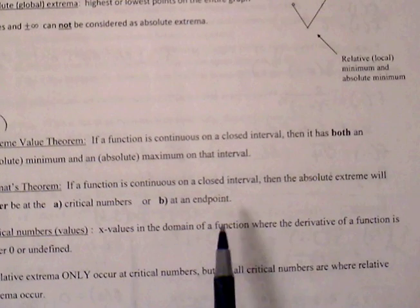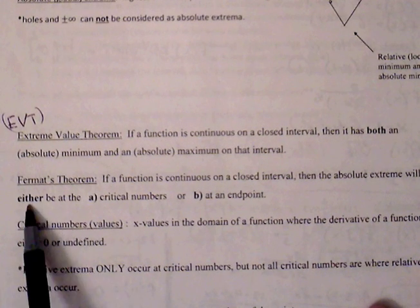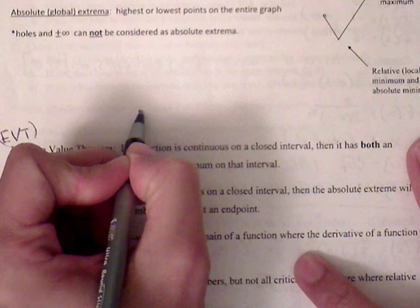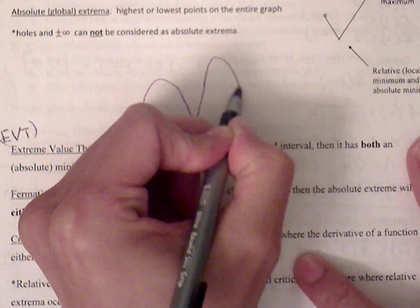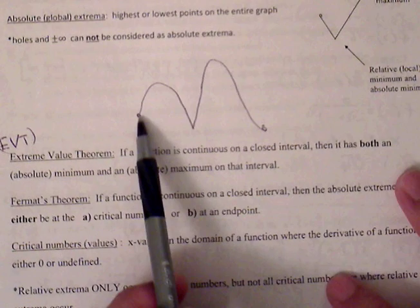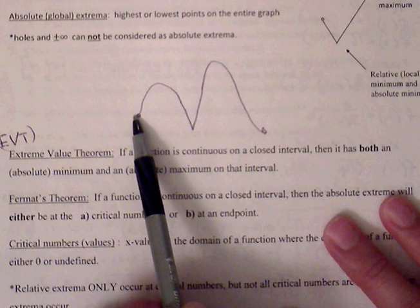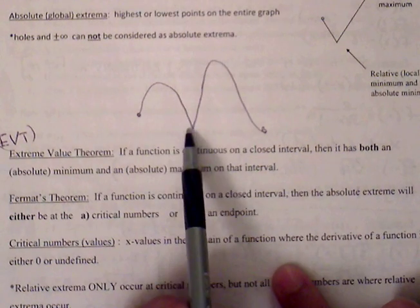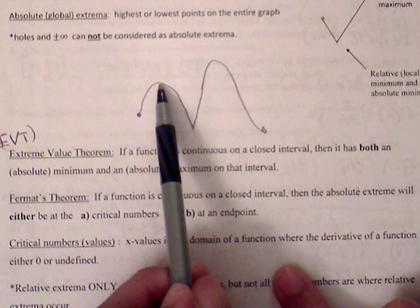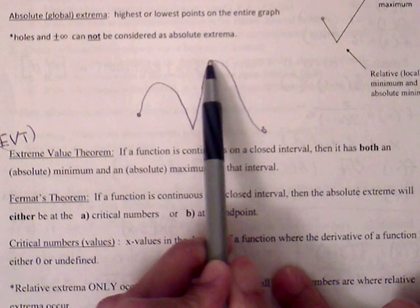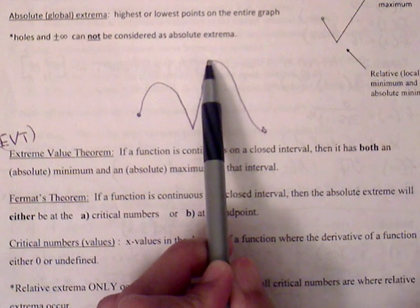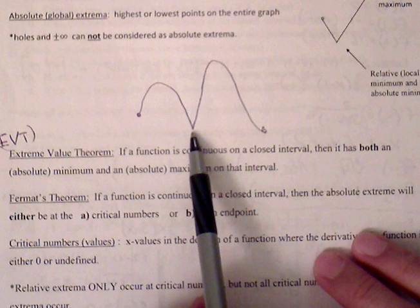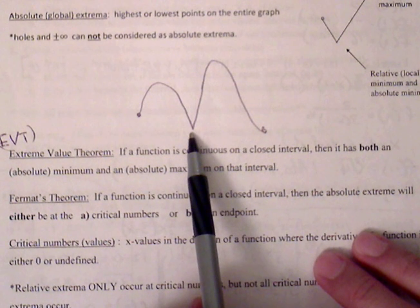Fermat's theorem says if a function is continuous on the closed interval, then the absolute extrema will be either at a critical number or at an endpoint. Critical points are found from the derivative — if we set the derivative equal to zero, we find where the slope is zero, and if we set the denominator of the derivative equal to zero, we find where the slope does not exist. A sharp point, where the slope does not exist, is also a potential candidate for an absolute max or absolute min.